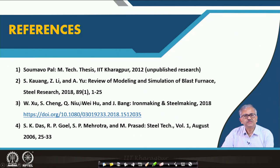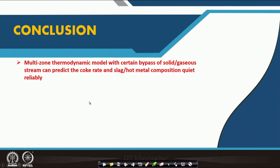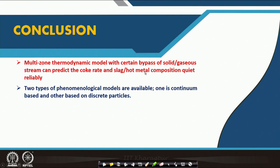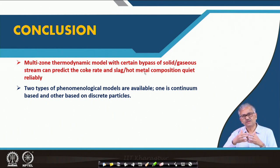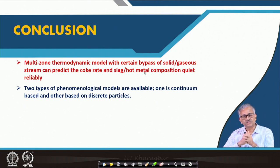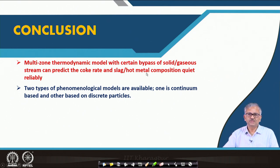In conclusion: a multi-zone thermodynamic model with certain bypass of solid and gaseous streams can predict the coke rate as well as slag and hot metal composition quite reliably. By taking some bypass of the gas and solid stream to consider kinetic effects — such as shaft efficiency — we can make it more realistic. The slag and hot metal composition prediction is quite good, and the coke rate prediction also matches with the RIST model.